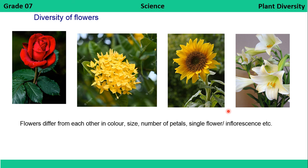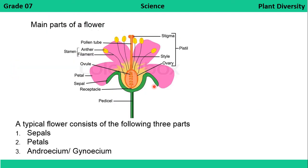Flowers differ from each other in color, size, and number of petals. Some flowers grow in an inflorescence, which means a bunch of flowers together, while others are single flowers. The flower may be single or in inflorescence, but all flowers have some main parts in common.